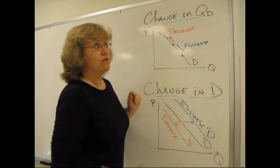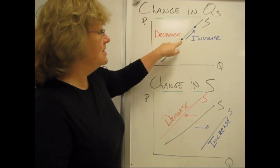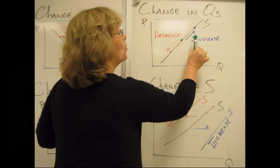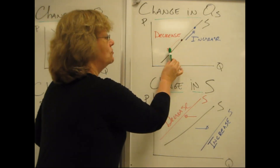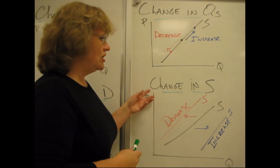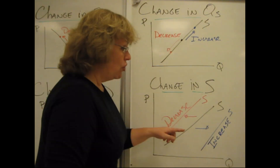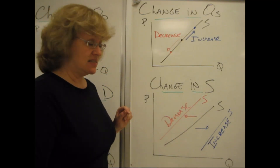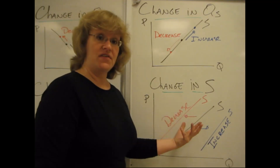Now let's talk about the equivalent concepts for supply. Just like with the demand curve, an increase in quantity supplied is a movement along the supply curve, going from the black dot to the blue one — associated with an increase in the amount that suppliers want to sell. A decrease in quantity supplied is a movement from the black dot to the red one, associated with a decrease in the amount that suppliers want to sell — a movement along the supply curve. A change in supply is associated with the movement of the entire curve. From the black to the blue curve, a rightward shift, we call that an increase in supply. From the black supply curve to the red, a leftward shift, we call that a decrease in supply. At every single price, there's a change in the amount that the supplier wants to sell.